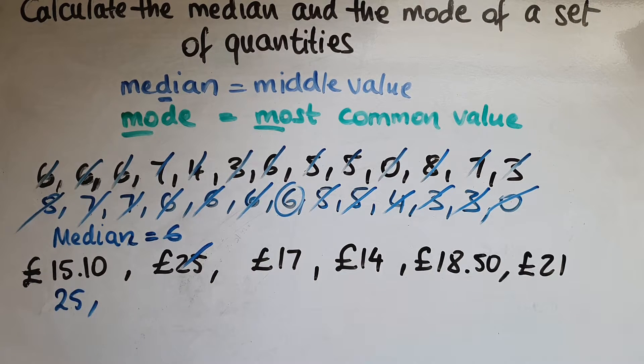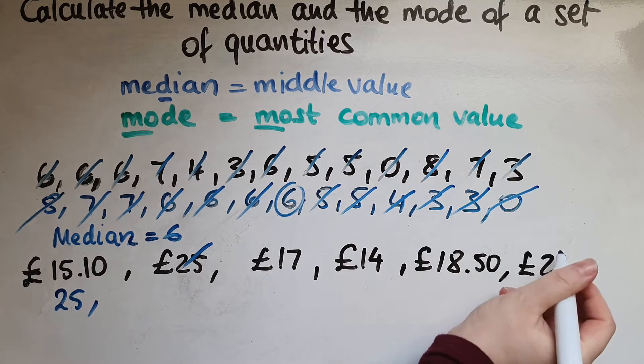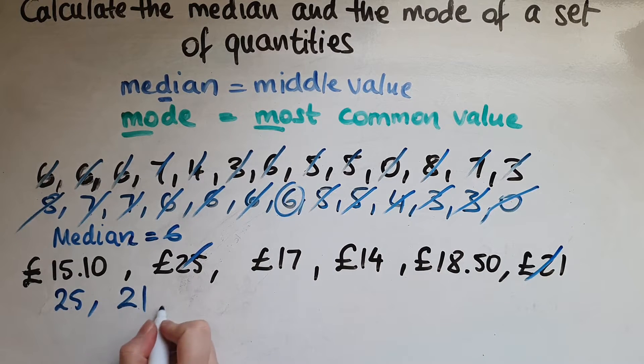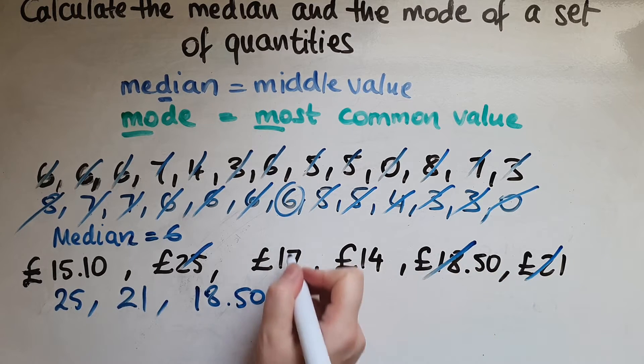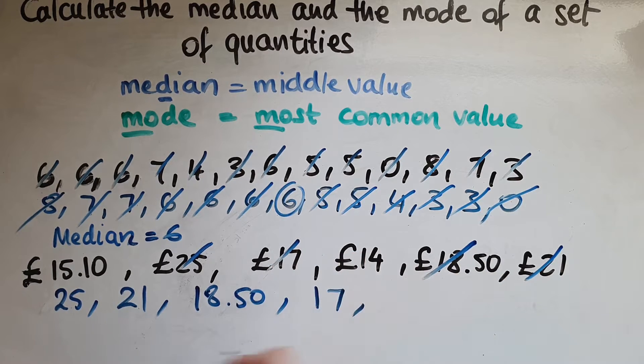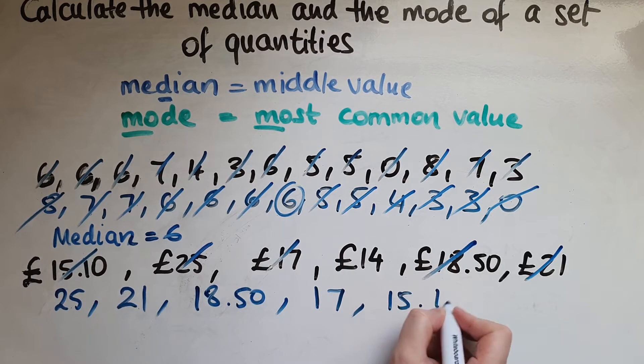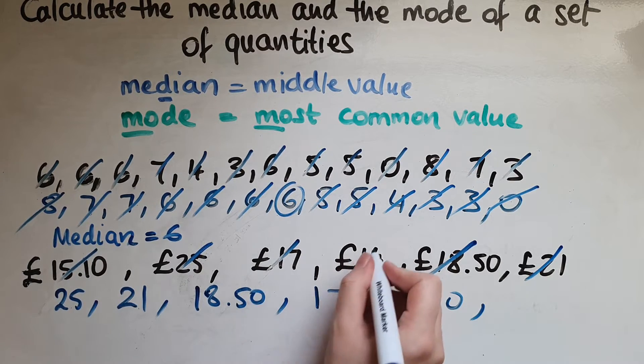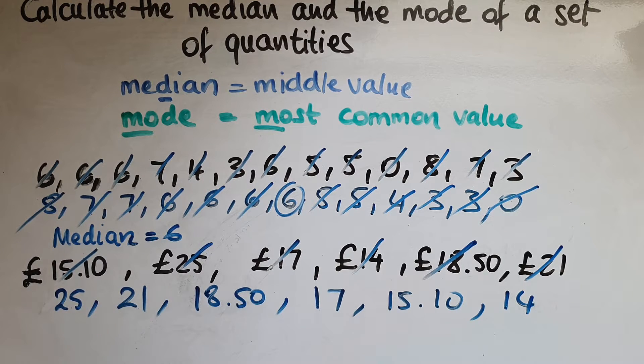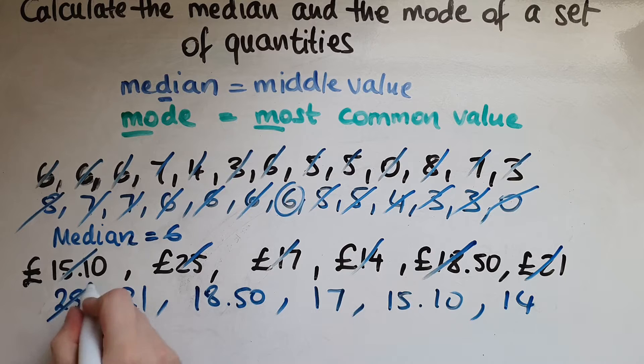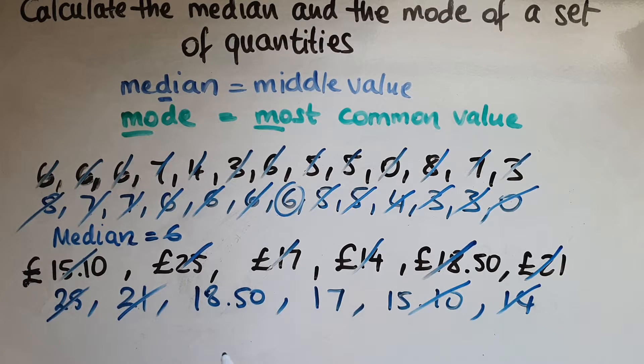And then we've got the 21. Then we've got 18 pounds 50. Then we've got the 17, 15 pounds 10 and 14 finally. So crossing them out both sides, we've got these two values in the middle.